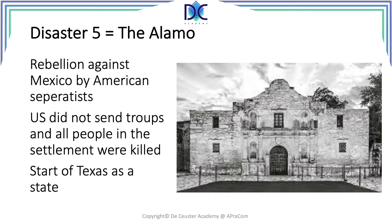Another well-known example, especially in the US: the Alamo. Some American separatists were fighting the Mexican army while waiting for support that never came. When you don't receive support, you essentially cannot complete your project. Missing support is a very important threat for people working on projects. The Alamo is a clear example — they didn't get the support. Nevertheless, Texas eventually became part of the United States, and people still refer to the phrase: 'Never forget the Alamo.'